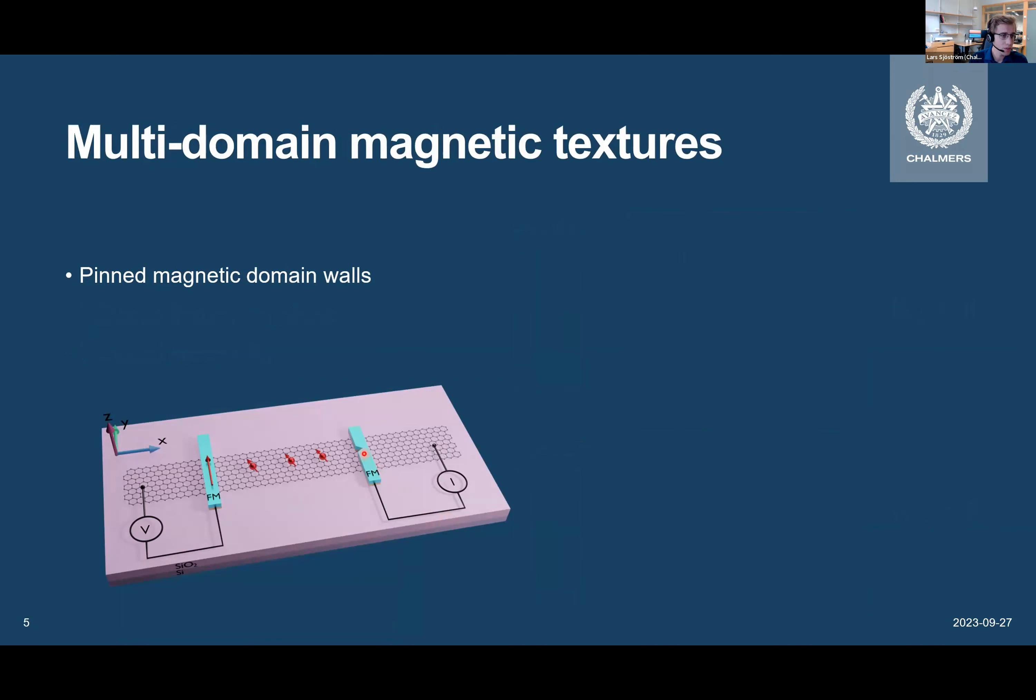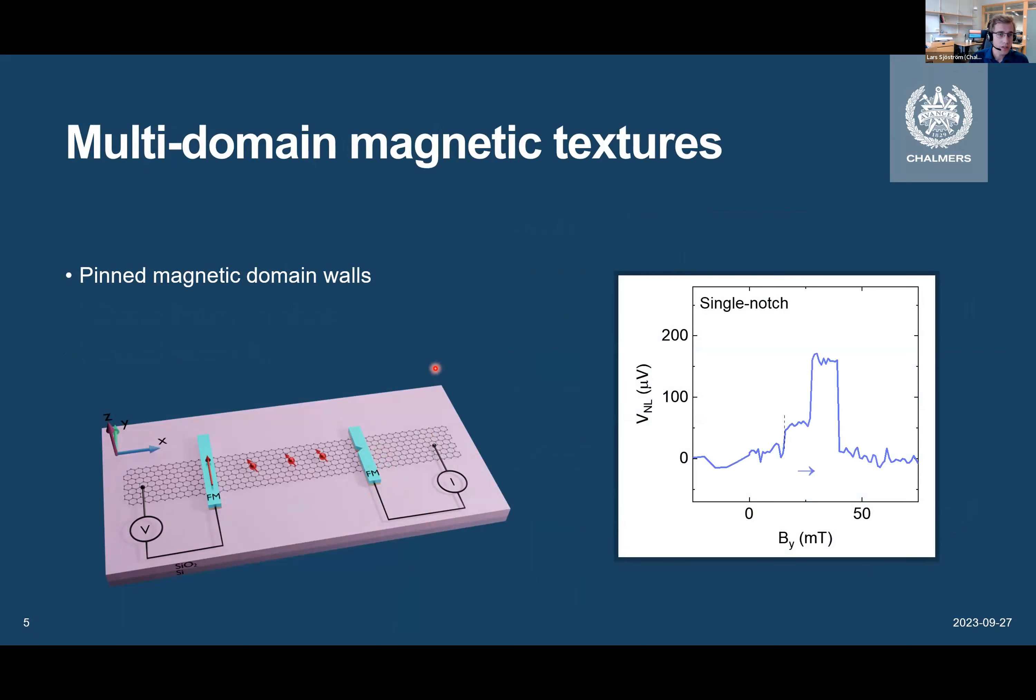But what happens if we have some more complex spin textures? To begin with, we put a notch here in our injector contact. And this notch is expected to pin a magnetic domain wall. So if we have one magnetic domain here and one domain here, we will have a wall here by the notch between them. And when we measure the spin valve signal, we get something a bit different from the basic case. We have now two steps going up and one step going down.